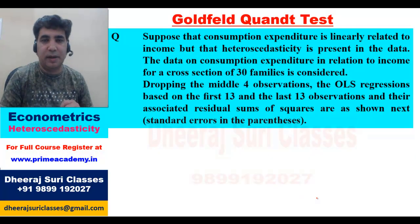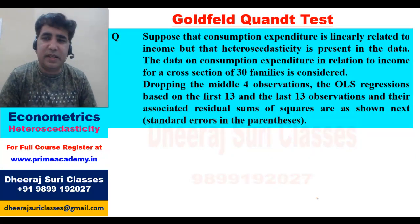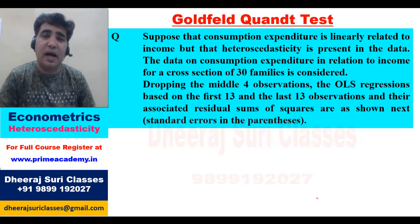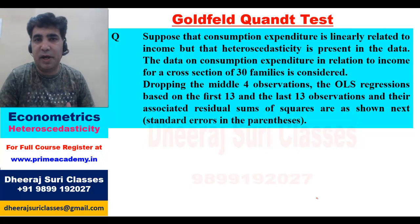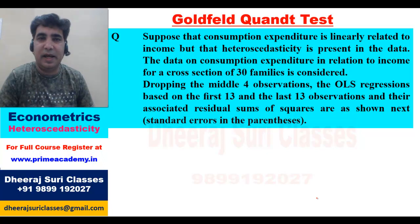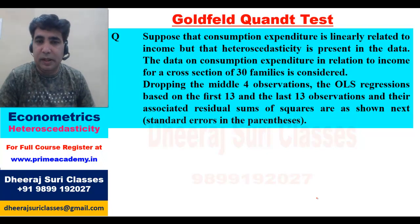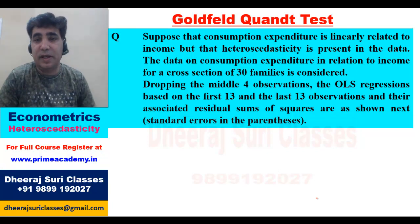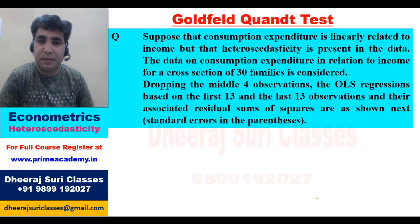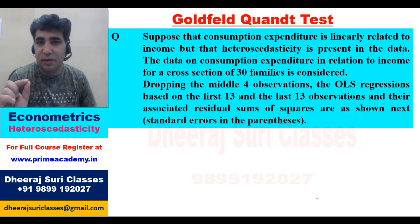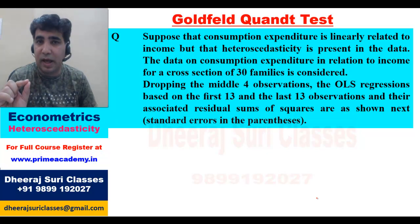Let's look at a question. Suppose that consumption expenditure is linearly related to income: Consumption = β1 + β2·Income + u. We suspect that heteroscedasticity is present. Data on consumption expenditure and income for a cross-section of 30 families is considered. We are dropping the middle 4 values, so C=4.